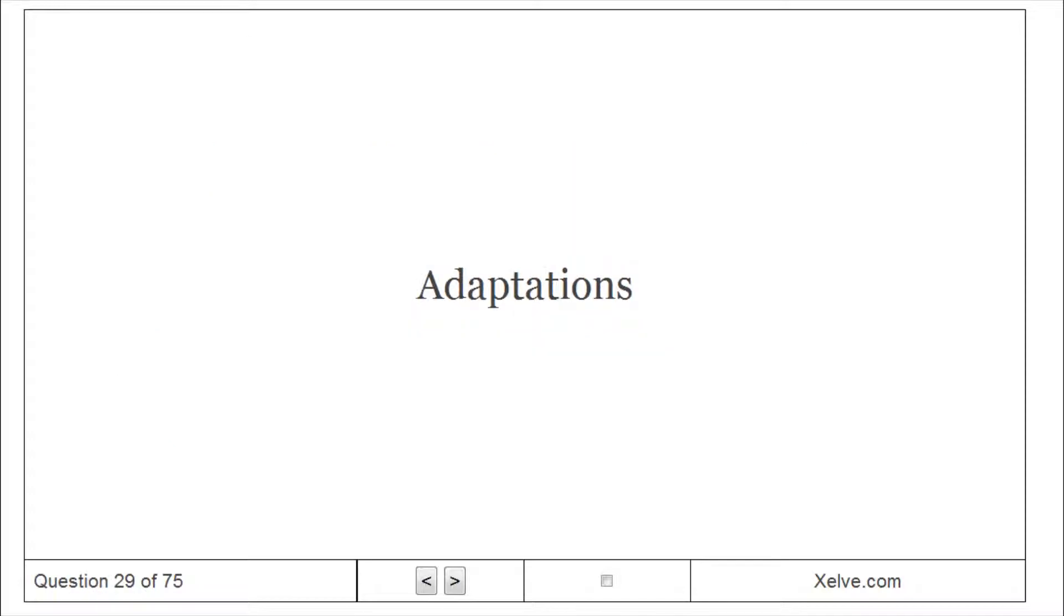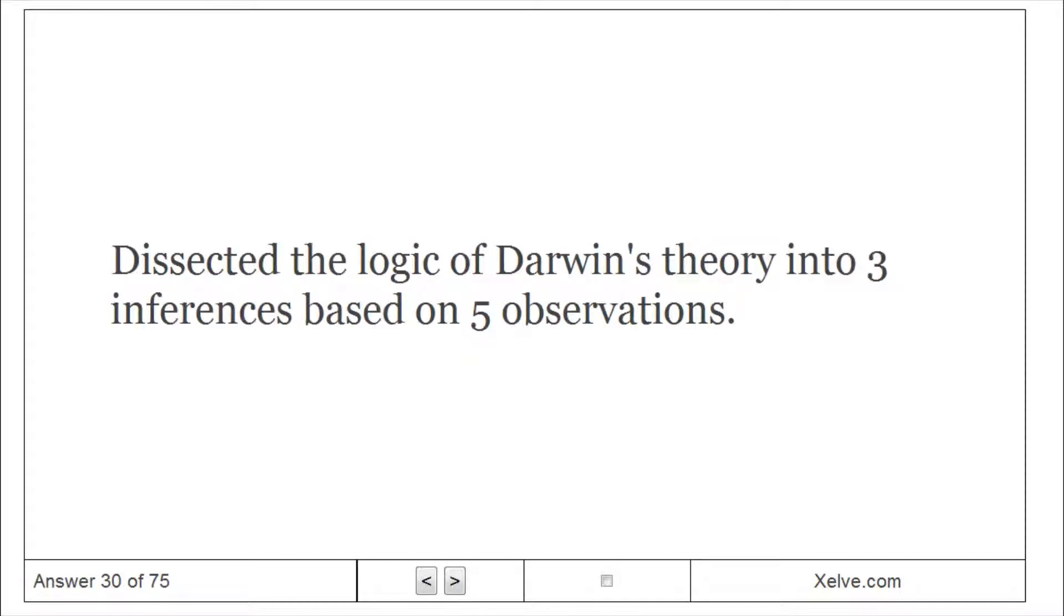Adaptations: Diverse modifications. Ernst Mayr dissected the logic of Darwin's theory into three inferences based on five observations.